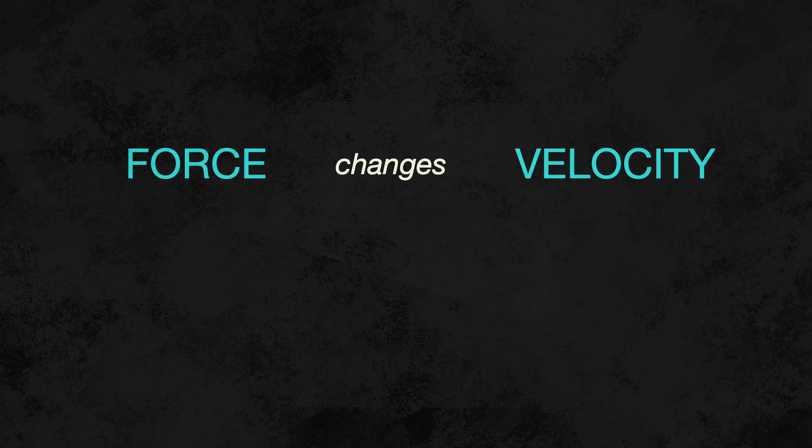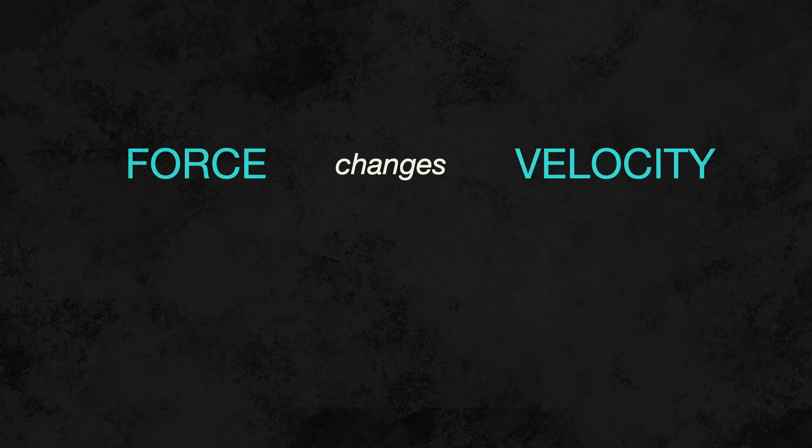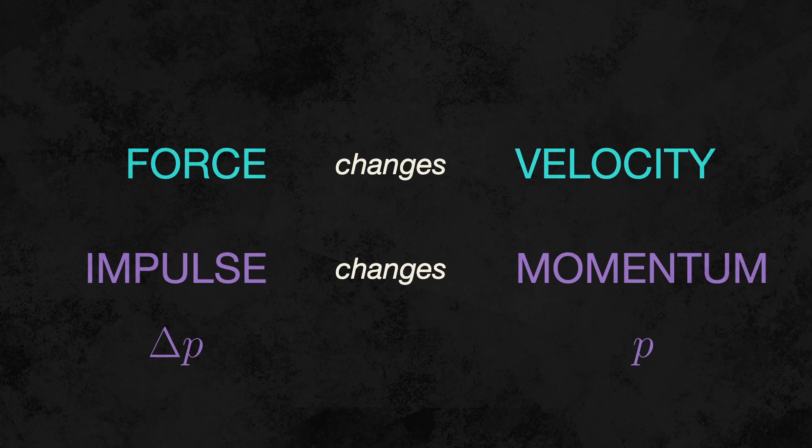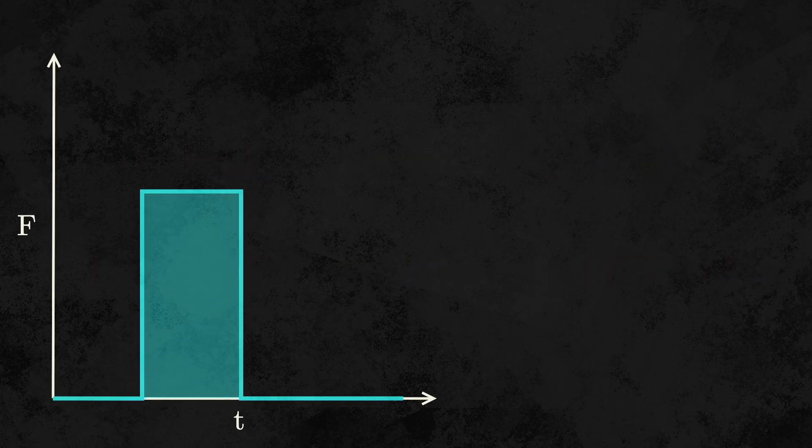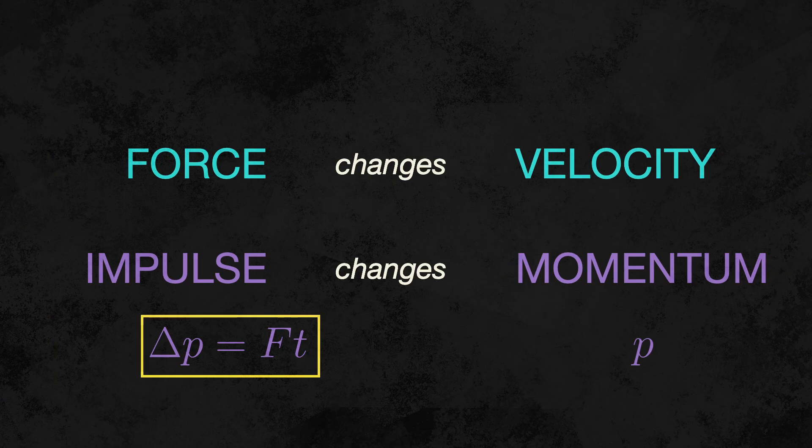Now, just like a force changes the velocity of an object, the momentum of an object can be changed by an impulse. Simply put, an impulse measures a change in momentum. The momentum of an object can be changed by applying a force to it over some period of time. Thus, impulse is force times time.